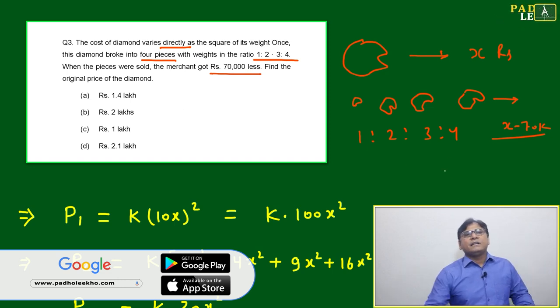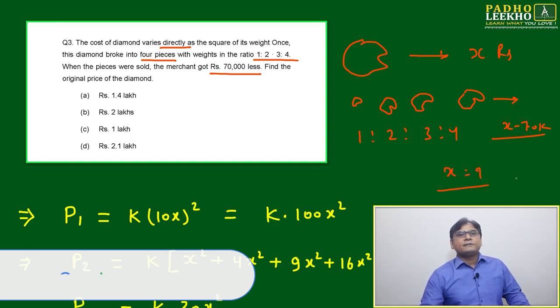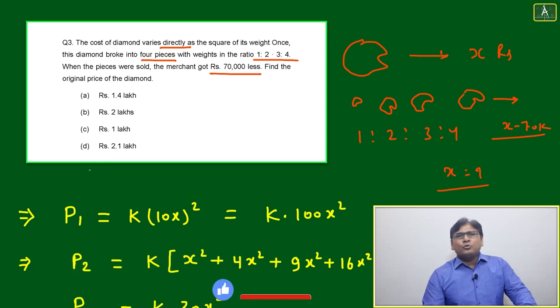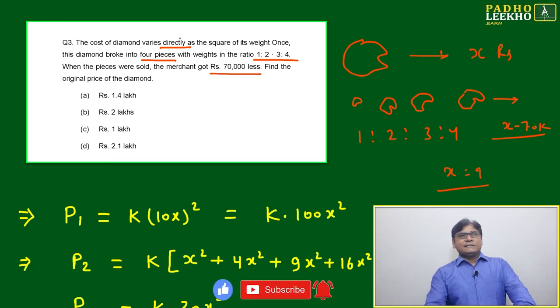We have to write two equations and solve, nothing else. Direct variation is given. It varies as the square of its weight.